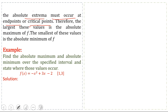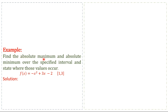Therefore, the largest of these values is the absolute maximum of f, and the smallest of these values is the absolute minimum. Example: Find the absolute maximum and absolute minimum over the specified interval and state where those values occur. f(x) = -x² + 3x - 2 with interval [1, 3].